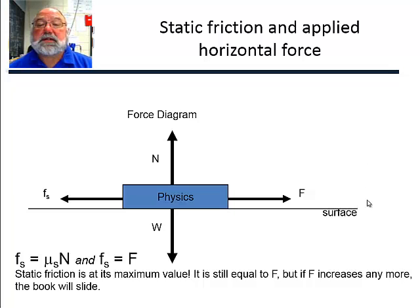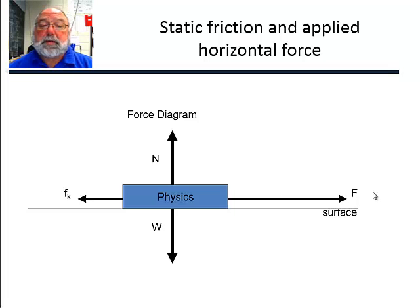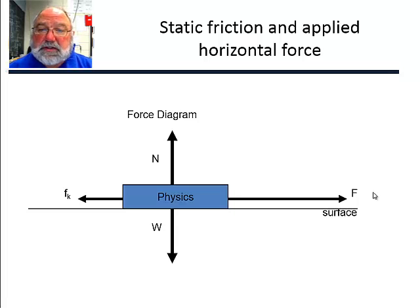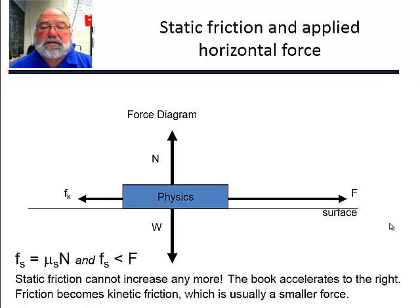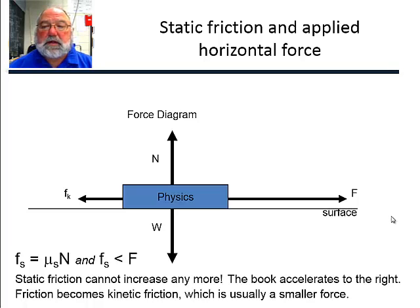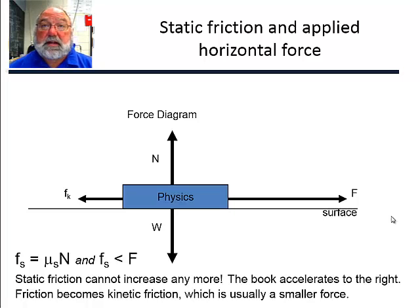We've increased the force above the maximum static friction. The book is sliding. Now we're in the region of kinetic friction. Once it's moving, we stay in kinetic friction until the object stops and re-enters static friction. In this case, the book is going to accelerate to the right because we're now in kinetic friction, which is usually less than static friction. With just a little bit of an increase of force to get beyond static friction, the book will start to accelerate.